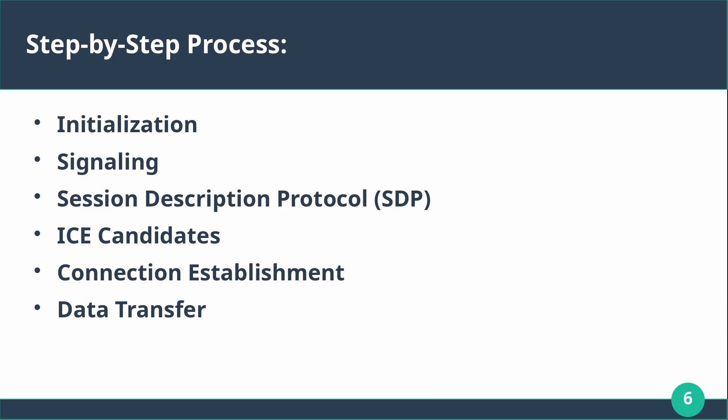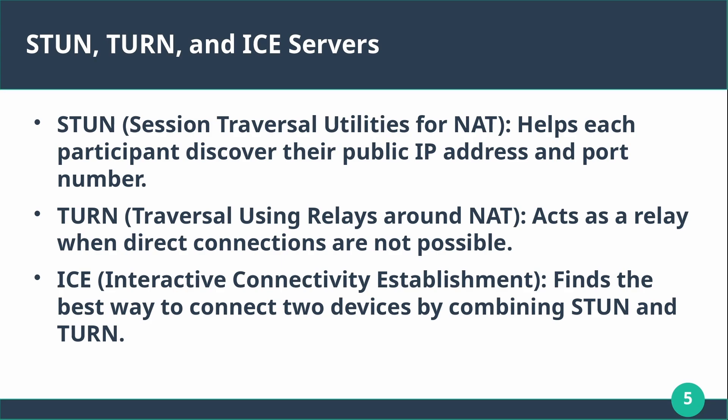The third step is Session Description Protocol, or SDP. Once the connection information is exchanged, both users know how to reach each other. SDP is like agreeing on the language and format for the conversation, ensuring both parties understand each other. Next, ICE candidates — potential ways the devices can connect — are tested to find the best route. Once the best path is found, the devices connect directly and data transfer begins. Now the devices can exchange video, audio, or files in real time during the call.